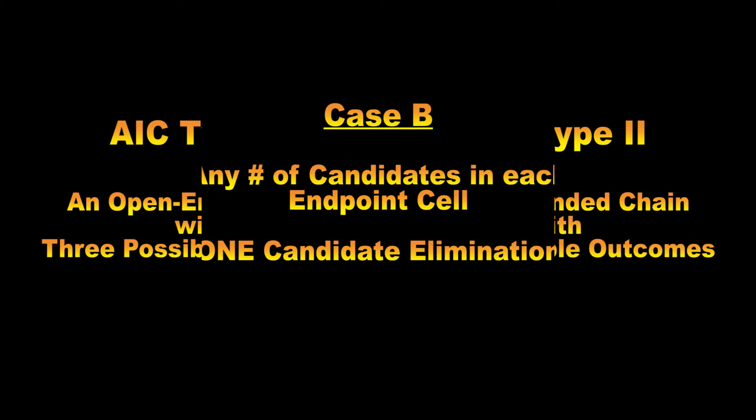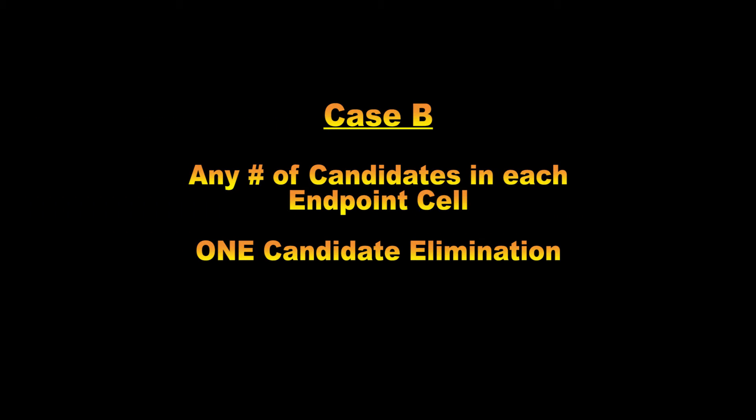Hello, and welcome back. Today will be the second of our three tutorials on open-ended AICs type 2. We fully reviewed the basics for AICs type 2 at the beginning of video number 35, so I won't bother repeating all of that here. If you recall from the last lesson, there are three possible outcomes, or cases, for these AIC type 2 chains. Today we will examine case B, which is probably the most common of the three.